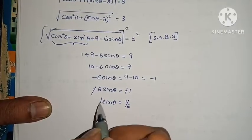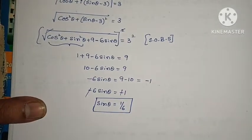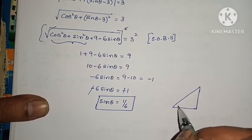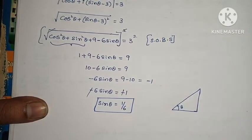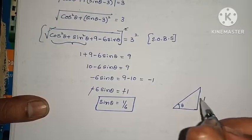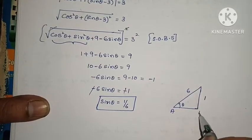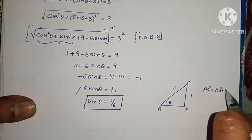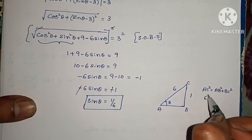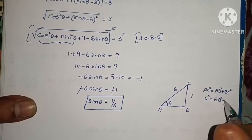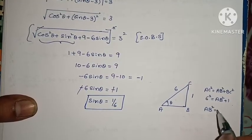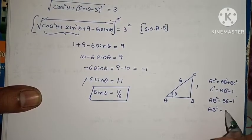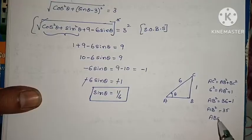Squaring both sides: 10 − 6sinθ = 9, so −6sinθ = −1, giving sinθ = 1/6. Using a right triangle with hypotenuse 6 and opposite side 1, by Pythagoras: AC² = AB² + BC², so 6² = AB² + 1², giving AB² = 35, AB = √35. Therefore cosθ = √35/6.